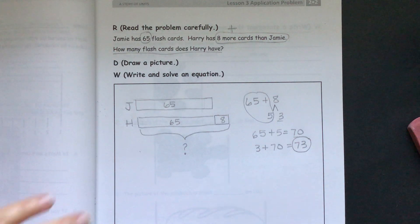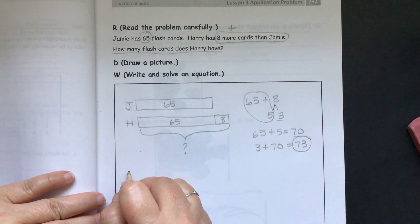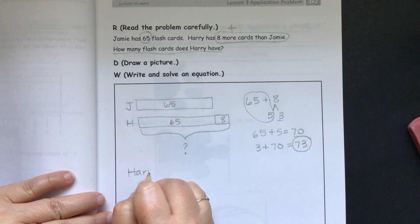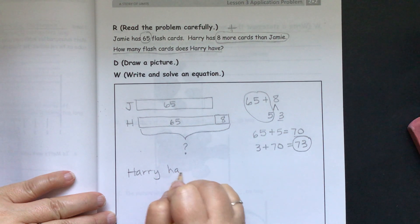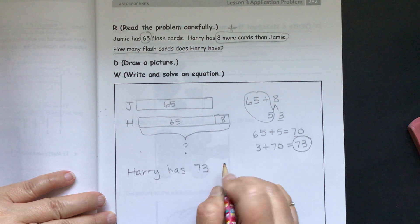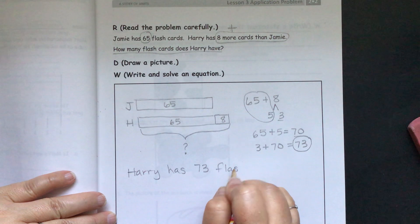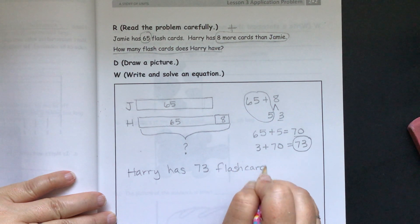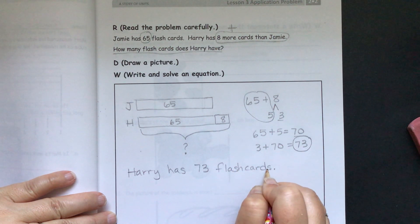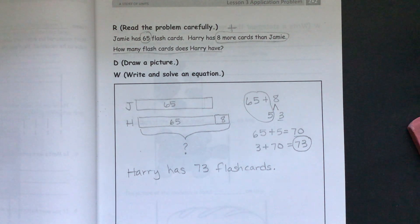So we'll write our sentence. Harry has 73 flashcards. There we go. We're going to move on to our problem set.